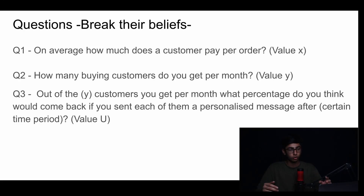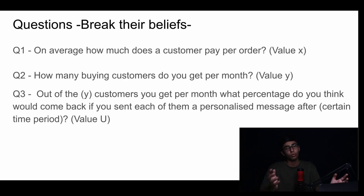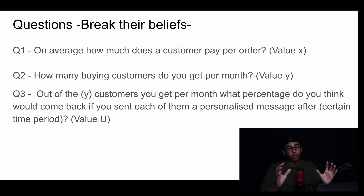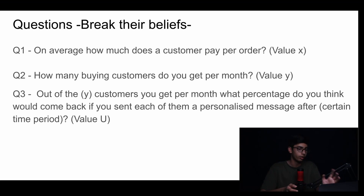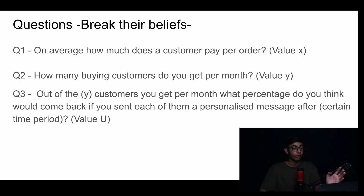We're going to write that order value as value X. Question number two: how many buying customers do you get per month? We're going to write this as value Y — the amount of customers that actually buy stuff per month. Question number three: out of the Y customers per month, what percentage do you think would come back if you sent them each a personalized message after a certain period of time?